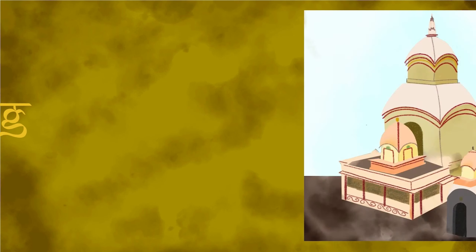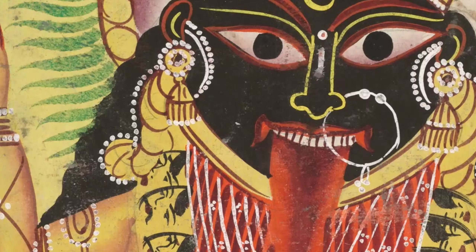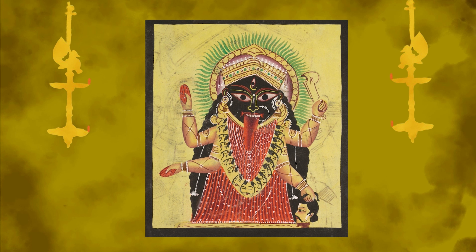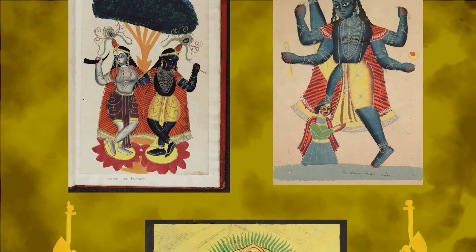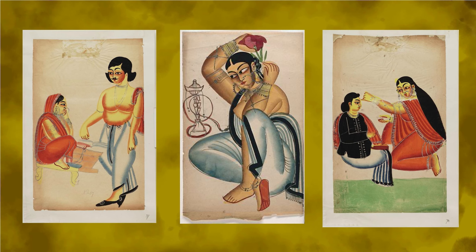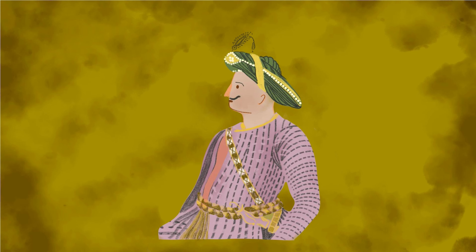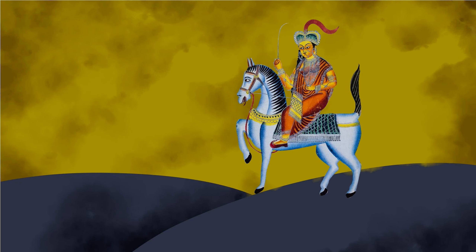Kalighat painting first originated in 19th-century Bengal near the Kalighat temple in Kolkata, and was produced by artists in the marketplace for sale to pilgrims visiting the temple. The style is characterized by broad, sweeping brushlines, bold colors, and simplification of forms. They were done on blank sheets with no attempt made to fill in the backgrounds. Most commonly depicted were the popular Hindu deities, but scenes of contemporary life including ordinary people engaging in everyday life were also prevalent. The paintings also commented on social evils or expressed support for the Indian independence movement through illustrations of figures like Tipu Sultan or Rani Lakshmibai, both revered for having fought the British.